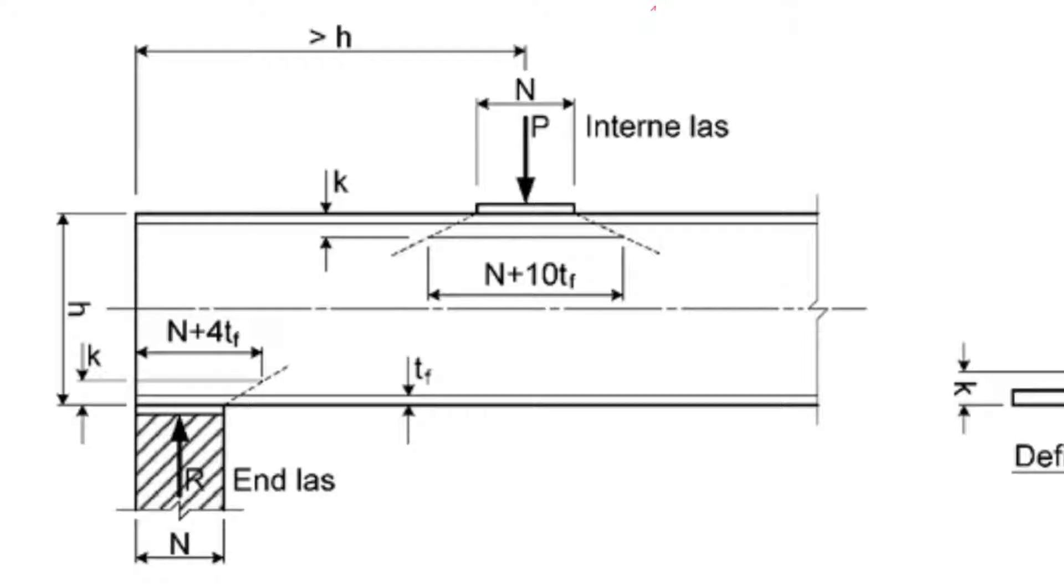We're going to consider how to design a beam with point loads applied, considering bearing resistance. On your screen you'll see a beam with different loads applied - an end load and an internal load applied over some distance.